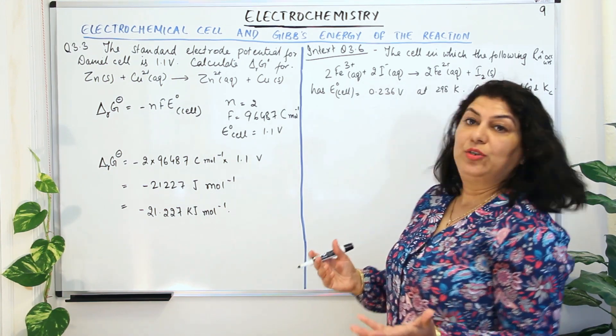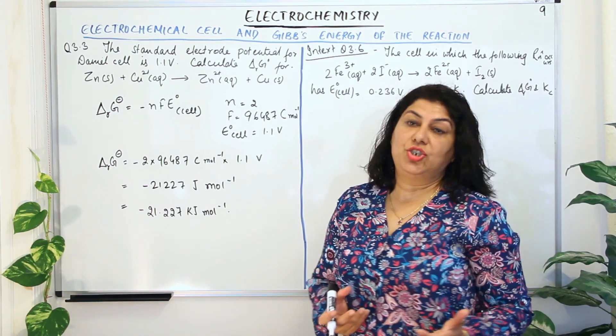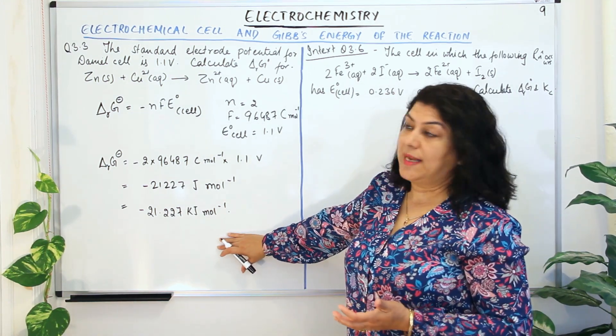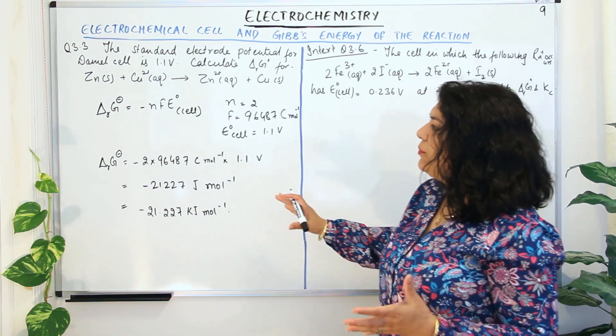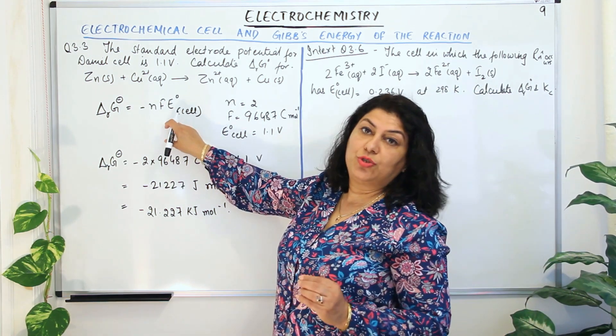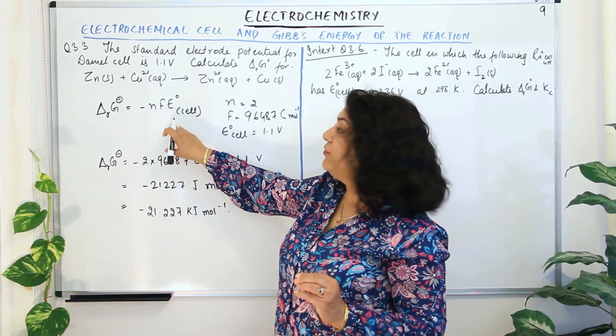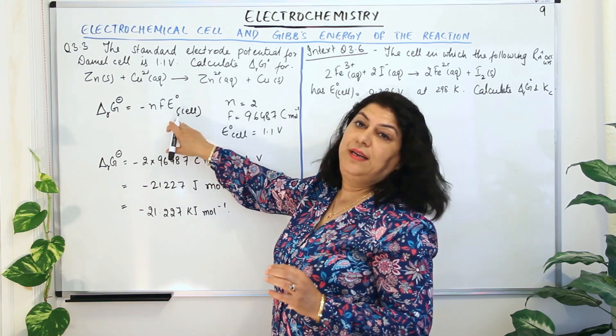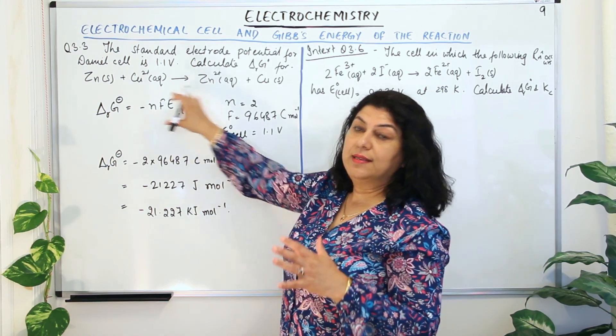So this is the value of ΔrG°, and this was your solved example — a simple problem where you only had to substitute the values of N, F, and E° cell into the equation.